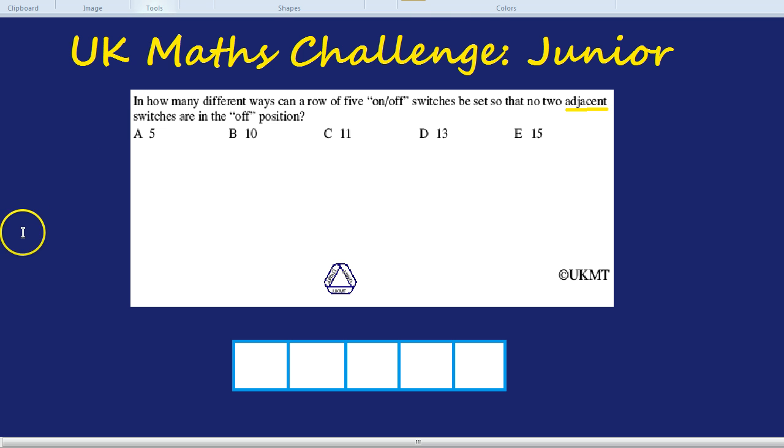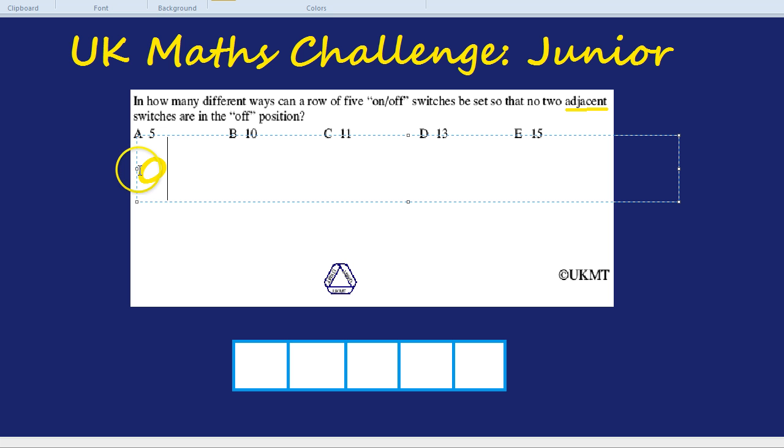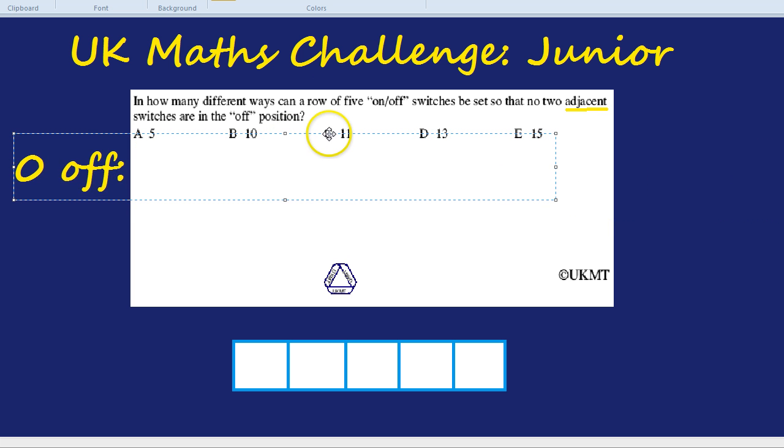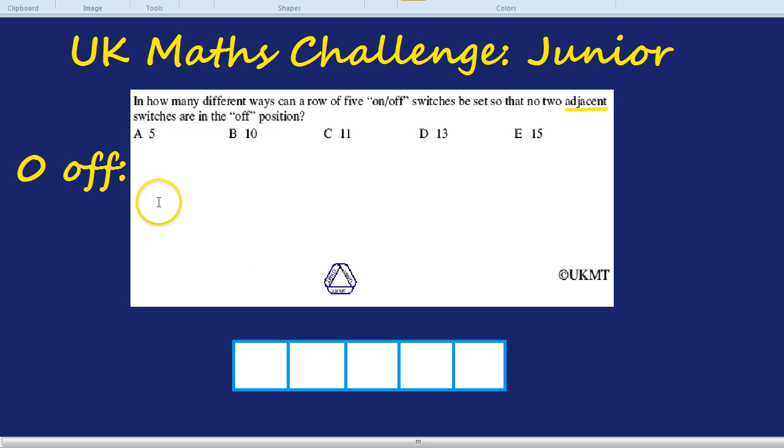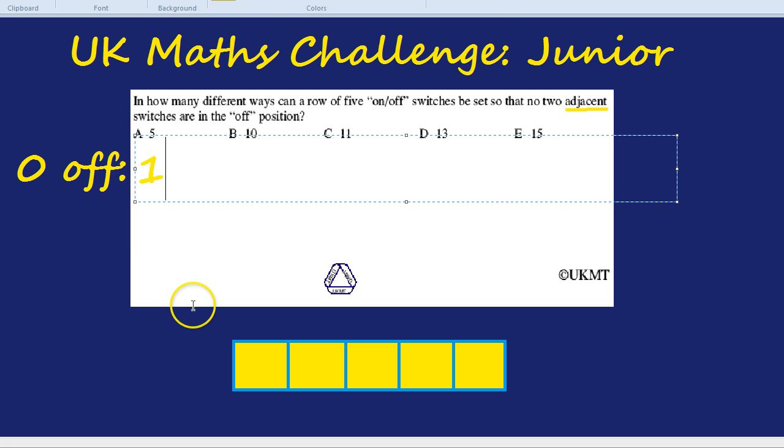First, we'd start with the lowest amount. So for example, zero off. Let's imagine there are zero switches that are off, and we'll count up the tally. Well, if there's zero off, that means they're all on. So it would be one, two, three, four, five. And that is one combination. You have to agree because there's no two off switches next to each other. So it works, definitely. Zero off, that's one combination that works. It's a strange combination, but it definitely works.